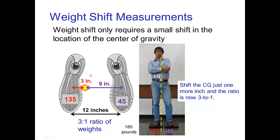And here I've shifted it just one more inch and so now the center of gravity is such that the center of pressure is three inches from one foot and nine inches from the other foot. And in this case the ratio of weight is three to one, so three times as much weight on one foot than the other. And you see here how that is affecting my pose.